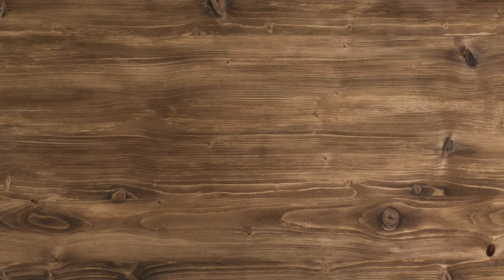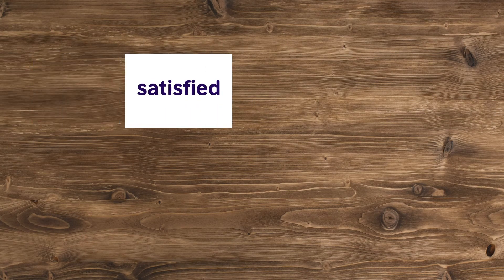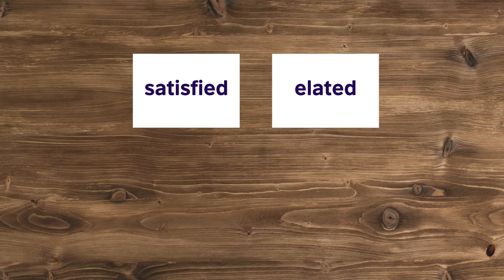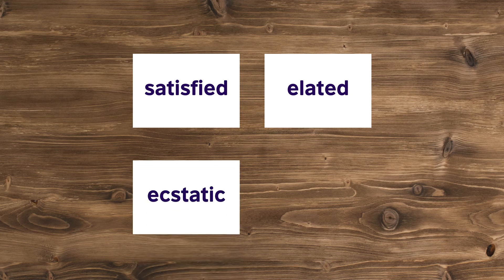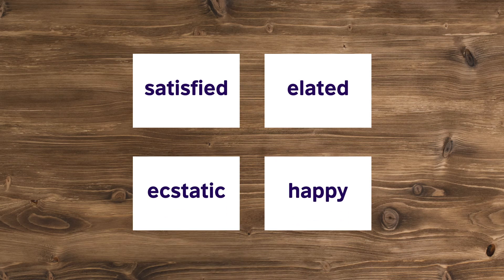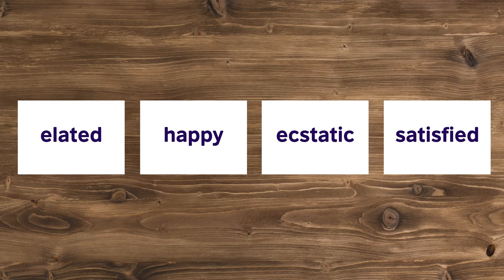For example, give your students a collection of words on cards. Once you've helped them with those they didn't know, ask them to arrange the words in a meaningful pattern, to map them. Then ask them to explain to their partner or another group why they chose this arrangement.